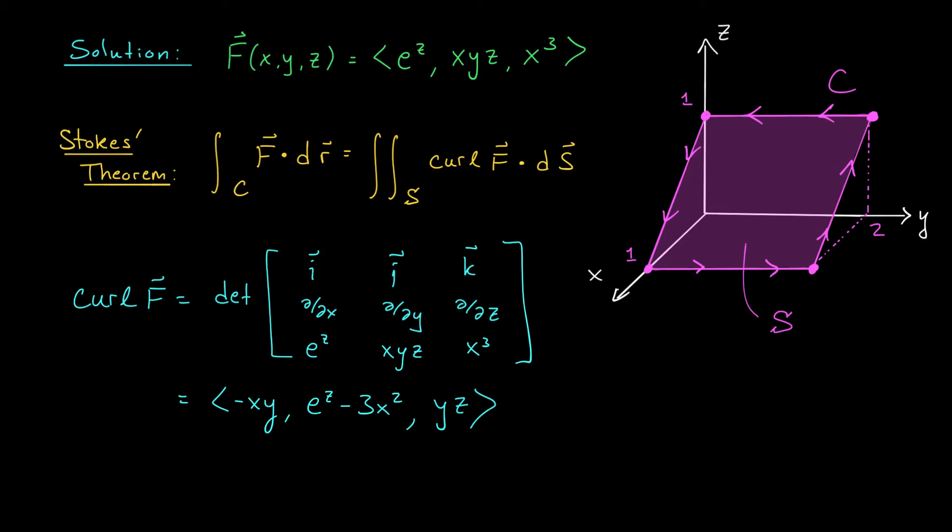We could say, all right, the plane contains this line segment and this line segment, and therefore their cross product is going to give us something orthogonal to the plane. But that's a lot of work, and I don't think it's necessary here. Notice that in our case, the plane is really just this line, z = 1 - x, in the xz plane, translated parallel to the y-axis. So the equation of the whole plane is z = 1 - x.